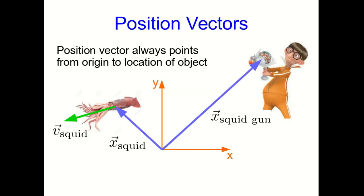Here is the supervillain vector showing us some vectors. And the point here is to look at position vectors. And I've drawn position vectors for his squid gun and for the squid that he's just fired from it. And a position vector, as I've shown, always points from the origin to the location of the object, just like these two position vectors.